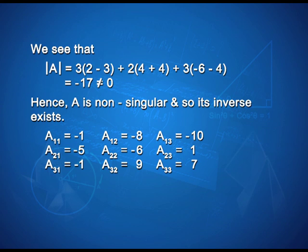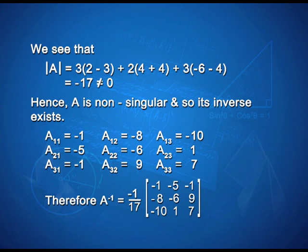The cofactors are: A11 = -1, A12 = -8, A13 = -10, A21 = -5, A22 = -6, A23 = 1, A31 = -1, A32 = 9, A33 = 7. Therefore, A inverse = (1/det(A)) × adj(A), giving the matrix [-1, -5, -1; -8, -6, 9; -10, 1, 7].